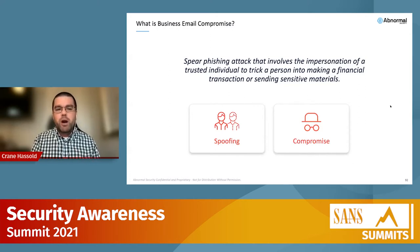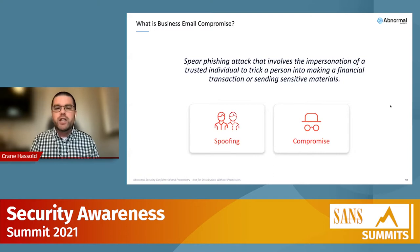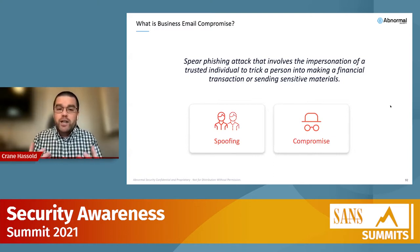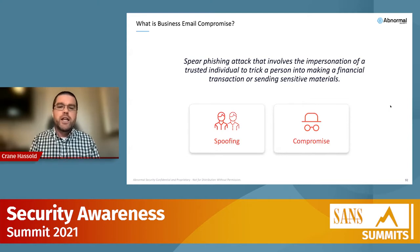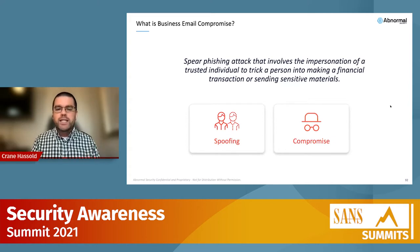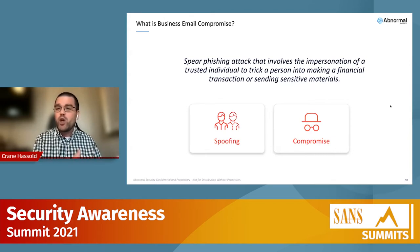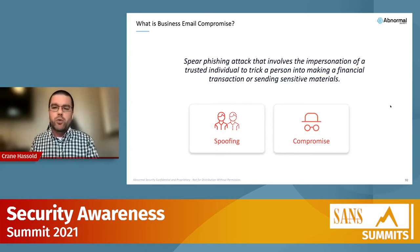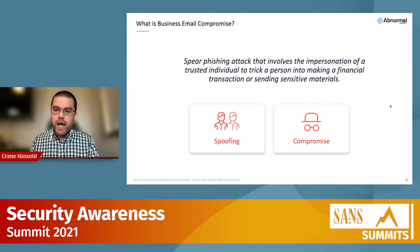The definition I primarily use for business email compromise is: it's a targeted spear phishing attack that involves the impersonation of a trusted individual or someone the target knows, in order to trick that person into making a financial transaction or sending sensitive materials. There are two primary ways this can happen: spoofing either the display name or the email address, or through the actual compromise of an email account, which has become more prominent recently.